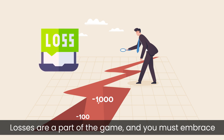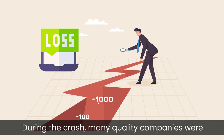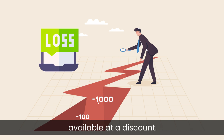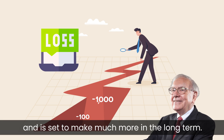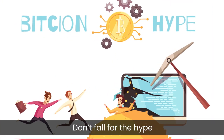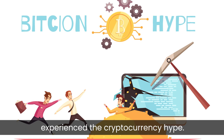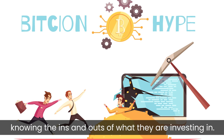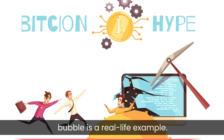Losses are part of the game and you must embrace them. Most importantly, it shouldn't discourage you from investing. During the crash, many quality companies were available at a discount — even Warren Buffett invested billions during the crash and is said to have made much more in the long term. Second: don't fall for the hype. Like the internet company hype, recently we experienced the cryptocurrency high. Many people fell for this and invested money without knowing the ins and outs of what they were investing in. This is the perfect recipe for disaster, and the dot-com bubble is a real-life example.